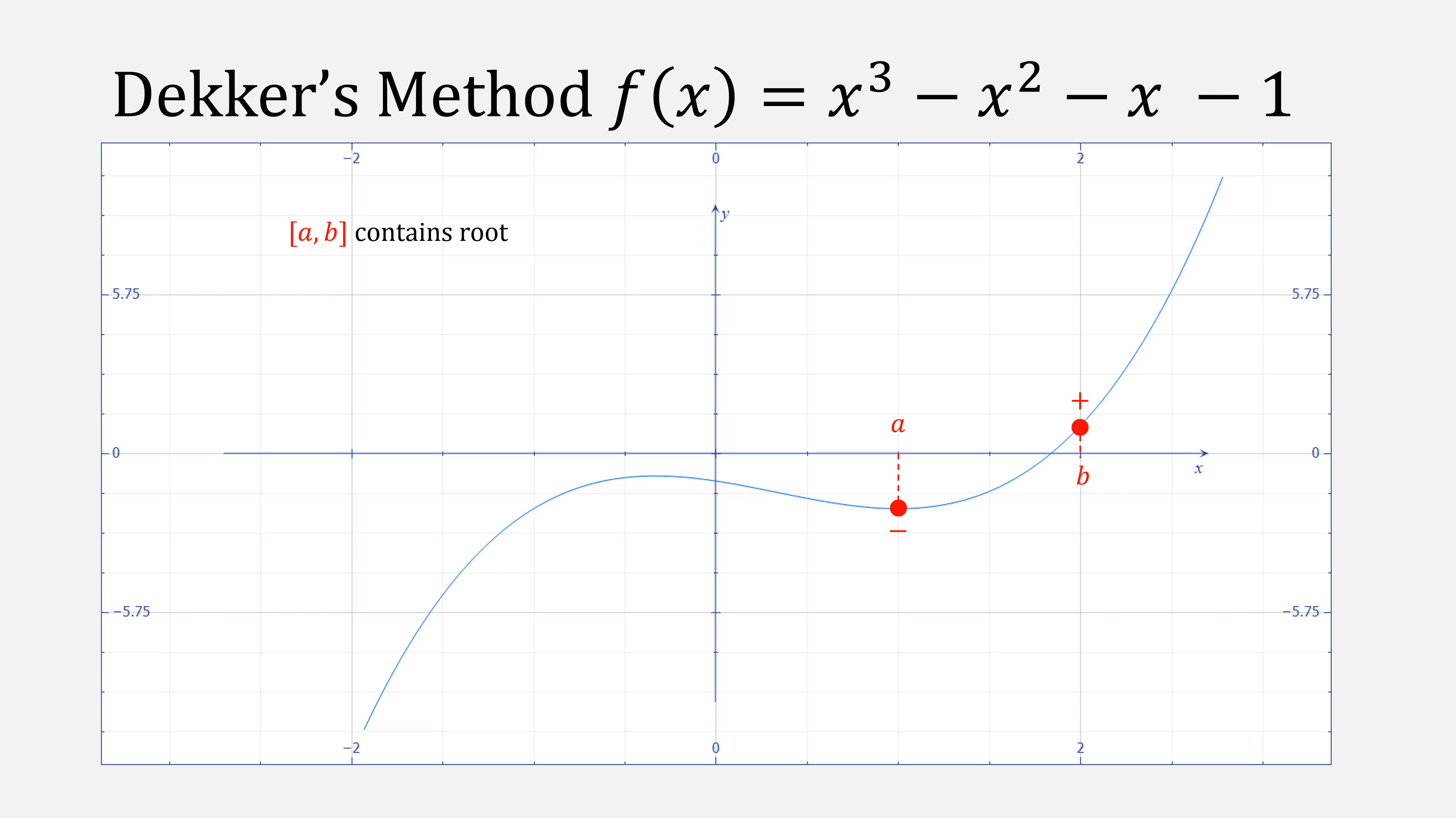Here is what that looks like visually. We have an interval a and b that contains a root since our function has different signs at those points. The value c is the last value b, but since we're starting it's initially a. We compute the secant using b and c, our midpoint between a and b, and then we update a, b, and c. Let's talk about how to do this right now.